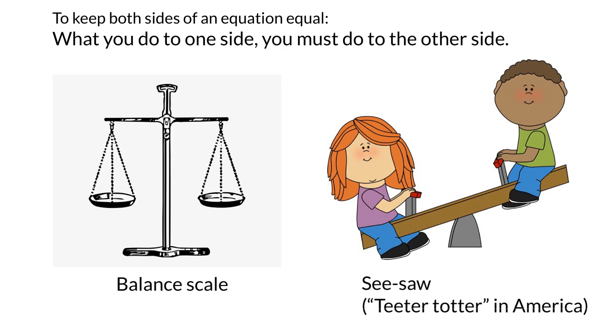So that's how the picture of balancing can help you. If you add something to one side, you must add the same thing to the other side. If you subtract something from one side, you must subtract the same thing from the other side. If you multiply one side by a number, you must multiply the other side by a number and so on.